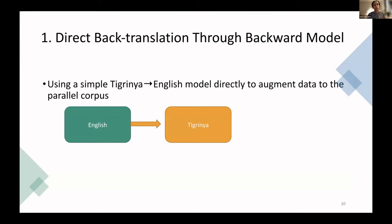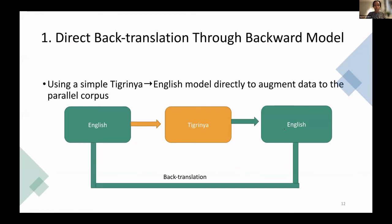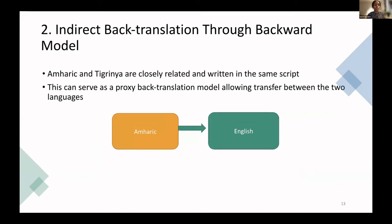In the experimental setup, for direct back translation: our main aim is to create an English-to-Tigrinya translation model, so we created a Tigrinya-to-English model, then brought in Tigrinya monolingual data and translated it with this model. The resulting parallel sentences were then fed to the original model and it was trained again using the original parallel sentences plus the monolingual data converted into English-Tigrinya parallel data.